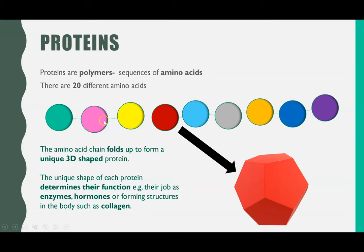That chain of amino acids then gets folded up. You fold all the sides on top of itself and you get a 3D shape. And depending on what 3D shape you get will determine the job the protein can do.